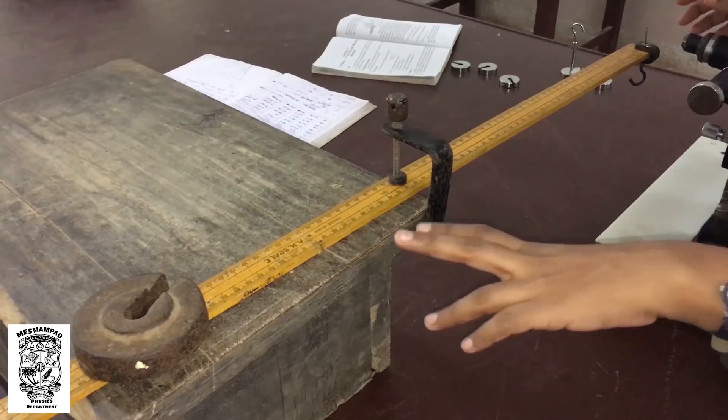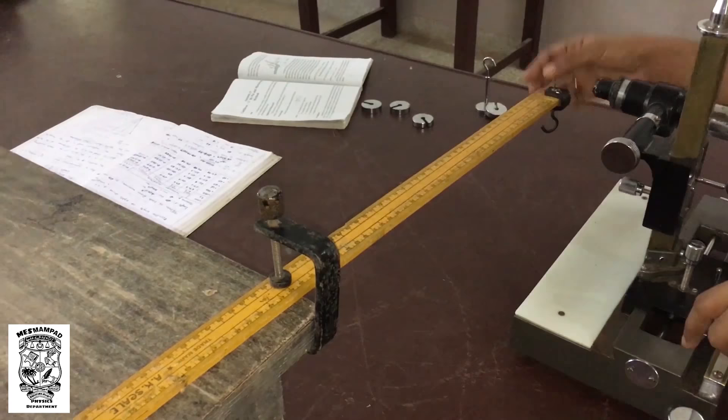The aim of the experiment is to find out the Young's modulus of the material of a given bar using it as a cantilever. A cantilever is a uniform bar fixed at one end and loaded at the free end.